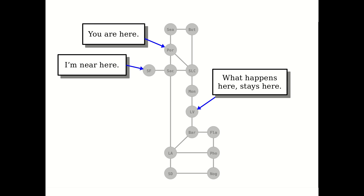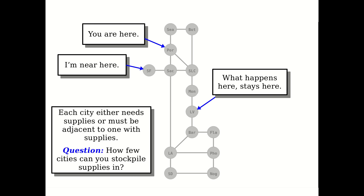It would be very expensive to have every single city provide all of its own emergency supplies, so we agree on a compromise: every city either needs to have emergency supplies or be immediately adjacent to a city that does. The question is: how few cities can you stockpile supplies in so that every city is ready? This is a problem many students would want to solve independently of the fact that it's a computer science exercise.